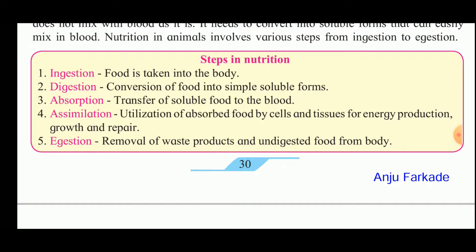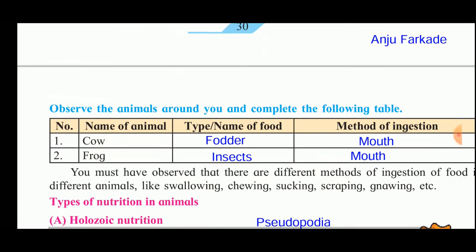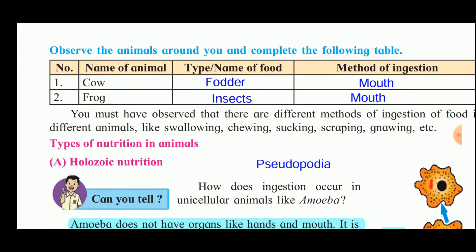So the five process steps of nutrition are: ingestion, digestion, absorption, assimilation, and ejection — that is, excretion, the removal of waste products from the body.